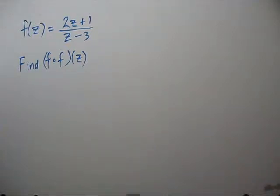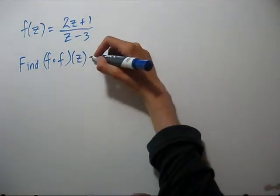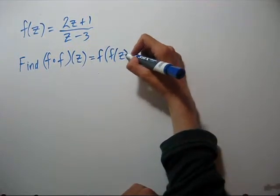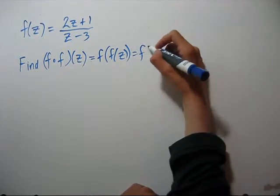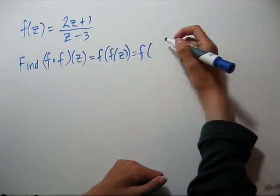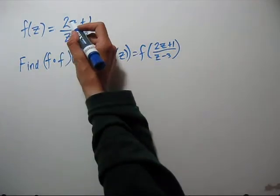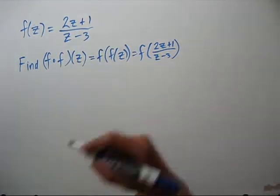We're going to take the composition of a function with itself. So this really means f of f of z, and f of z is this. So whatever's in our parentheses here, we're now going to input where the z is.